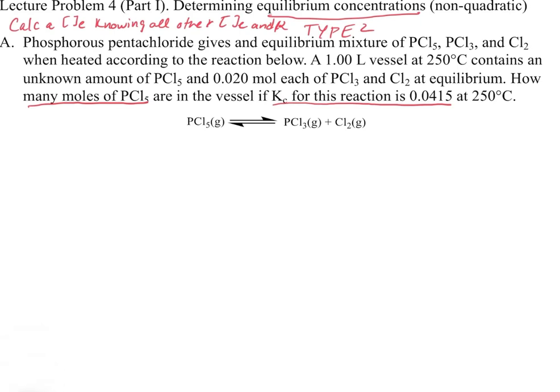A one-liter vessel at 250 degrees Celsius contains an unknown amount of PCl5 and 0.02 moles each of PCl3 and Cl2 at equilibrium. How many moles of PCl5 are in the vessel? We're looking for how many moles of PCl5 there are, and we know the number of moles each of PCl3 and Cl2.